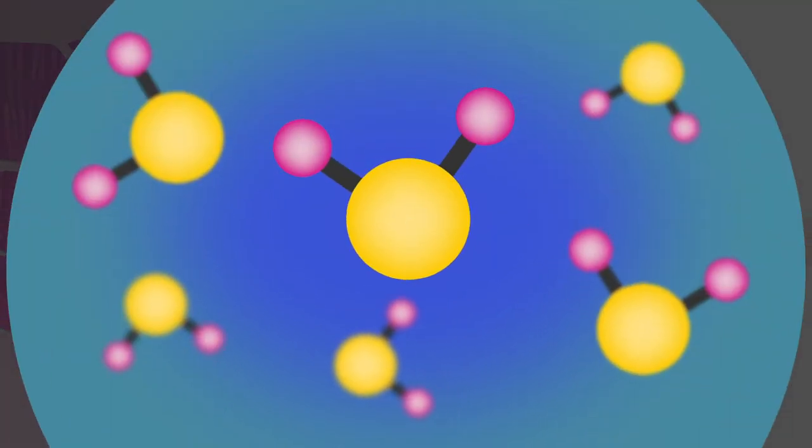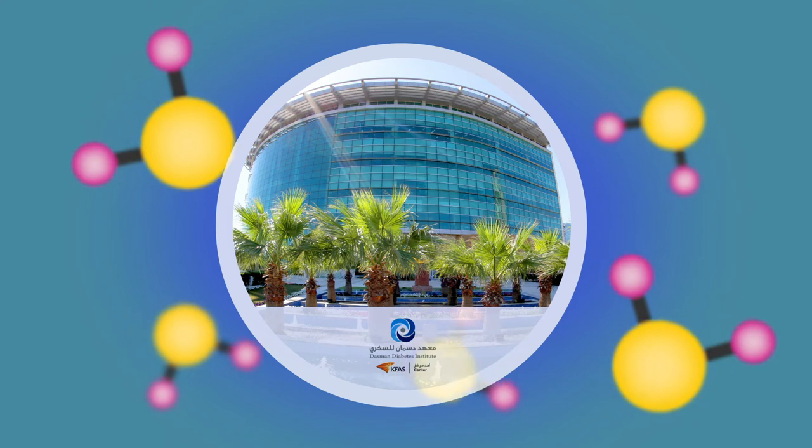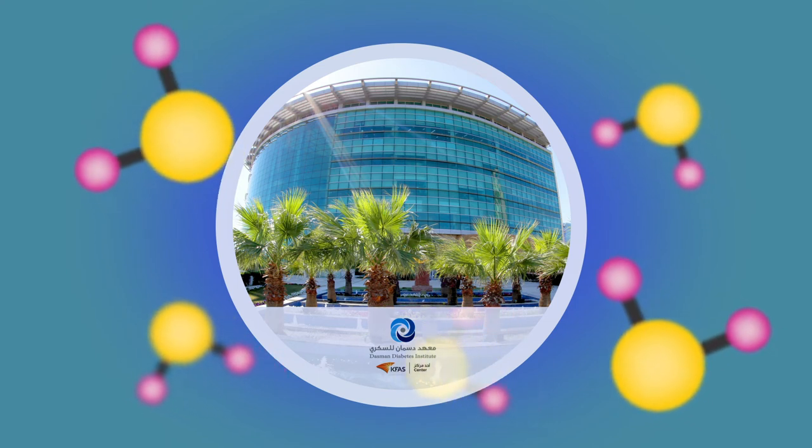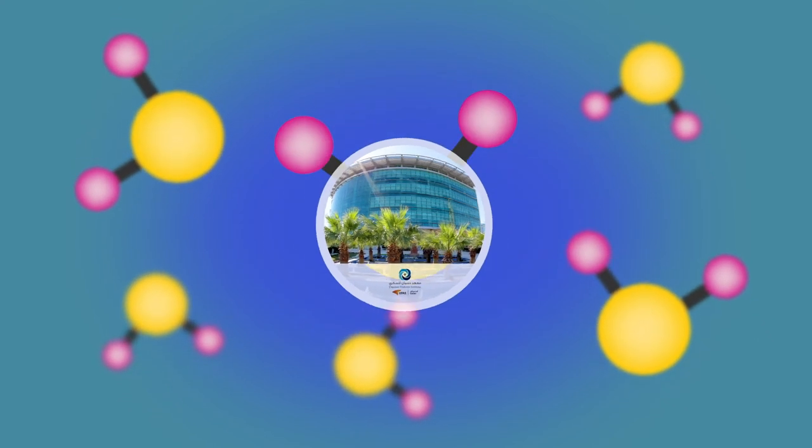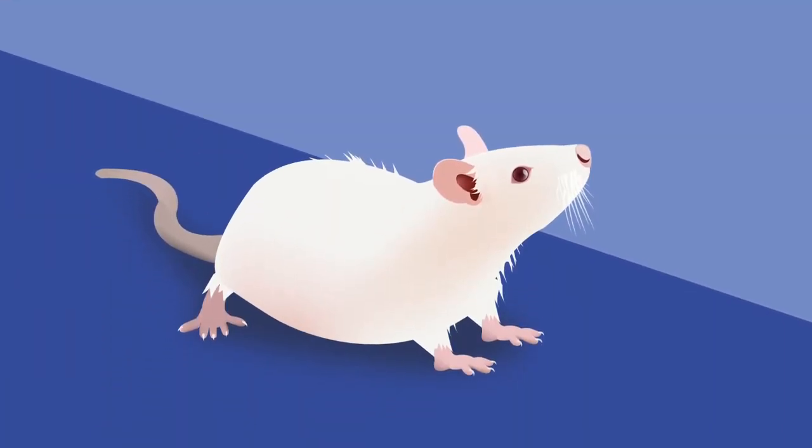In a recent study, researchers at the Dasman Diabetes Institute zeroed in on the molecular mechanism linking hydrogen sulfide to the reduction of sarcopenia. The team first performed a comprehensive set of tests on rats that modeled type 2 diabetes, since patients with diabetes are at higher risk of developing sarcopenia.